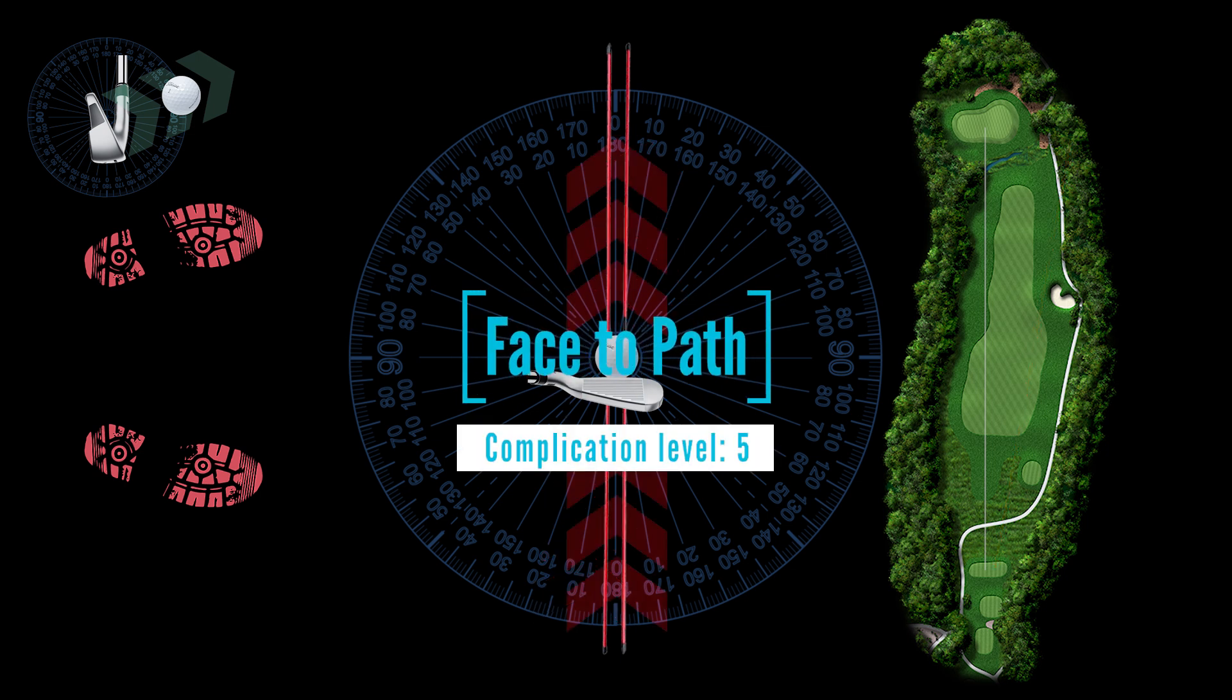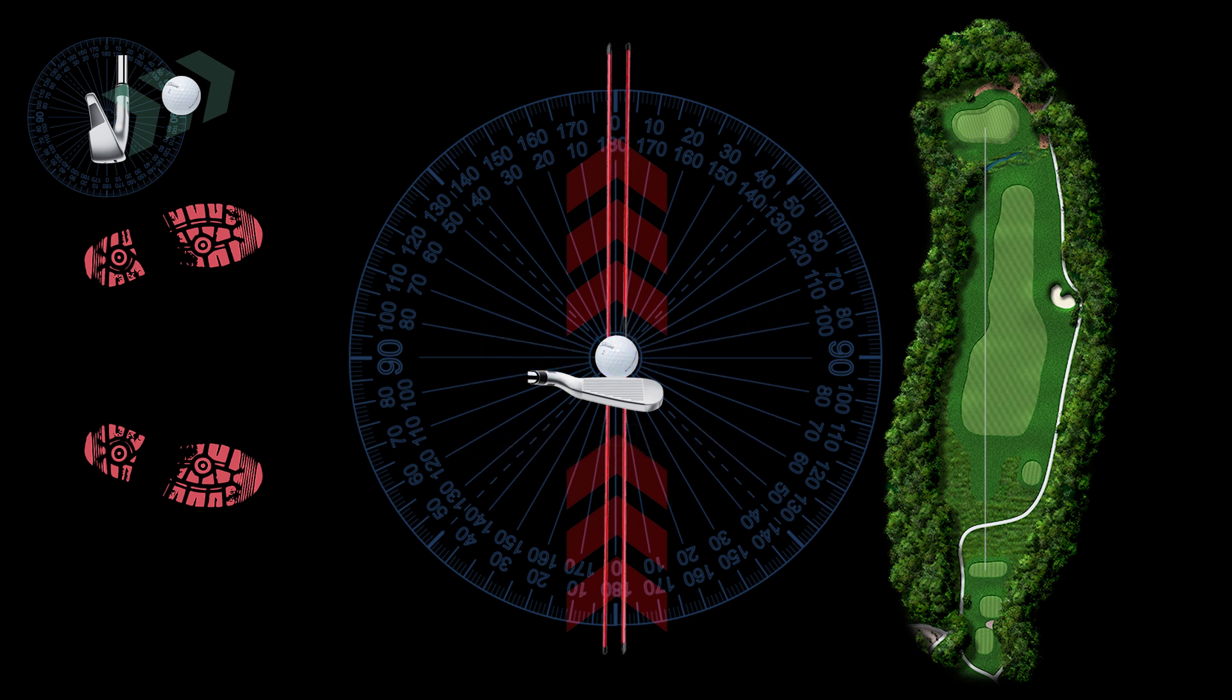Because while the club sends it the path, the face bends it by imparting spin. The primary source of spin is the club loft, but the secondary source is the face angle at impact. If the club face is slightly open, it will put right spin on the ball, causing it to curve to the right. If the face is closed, it will put left spin, and it will curve to the left.